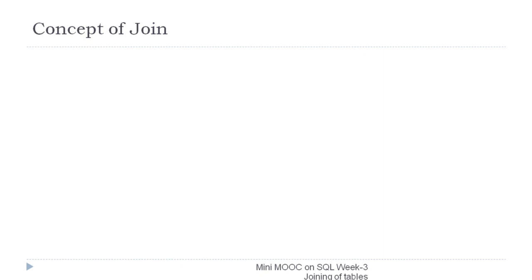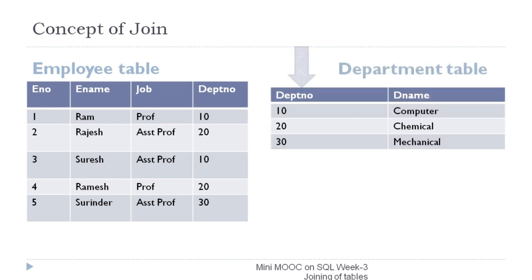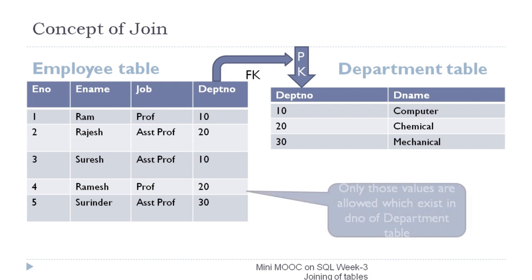Let us understand the concept of join with two tables. The first table is the employee table with columns enumber, ename, job, and department number. The second department table has columns department number and dename. The department number column of the department table acts as its primary key, while the department number column of the employee table acts as its foreign key. Only those values are allowed in the department number column of the employee table which exist in the corresponding master table.